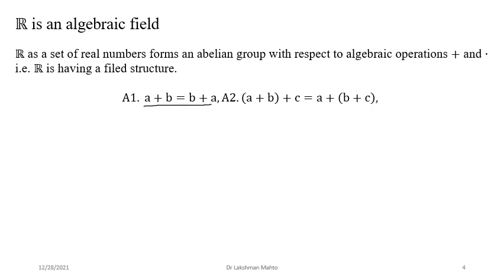This property — that order doesn't matter in addition — is called Abelian or commutative. The second property under the group structure with respect to addition is associativity. If you are taking three real numbers together, addition is a binary operation, which we may have already covered in set theory. A binary operation takes a pair of elements a and b at a time.